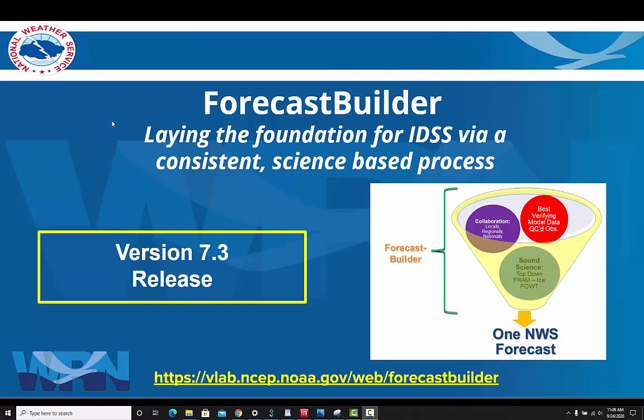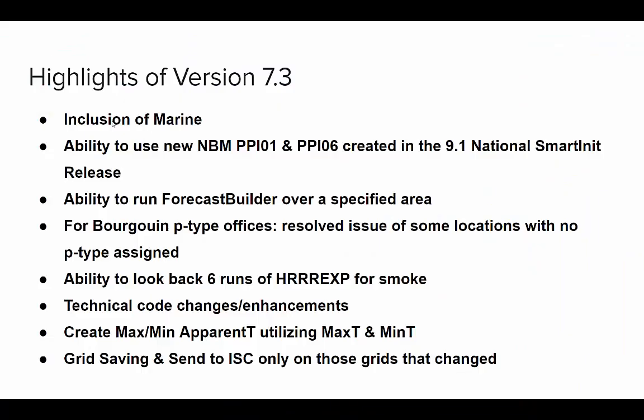Welcome to the version 7.3 release training of Forecast Builder. Here are some of the highlights of this version. The first is including marine into the ability to populate. We're also adding the ability to use the new MBM PPI01 and PPI06 created in the National SmartNet Release 9.1. Something that we had prior to version 7 but lost in the last couple of releases is the ability to run over a specified area, and we've got that back in 7.3.